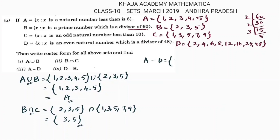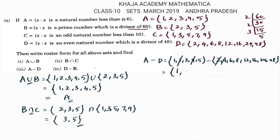Next, we need to find A minus D. Set A is {1, 2, 3, 4, 5} and set D is {2, 4, 6, 8, 12, 16, 24, 48}. For set subtraction, cancel the common elements: 2 and 4 cancel. Whatever is left on the left side is the answer, so A minus D is {1, 3, 5}.